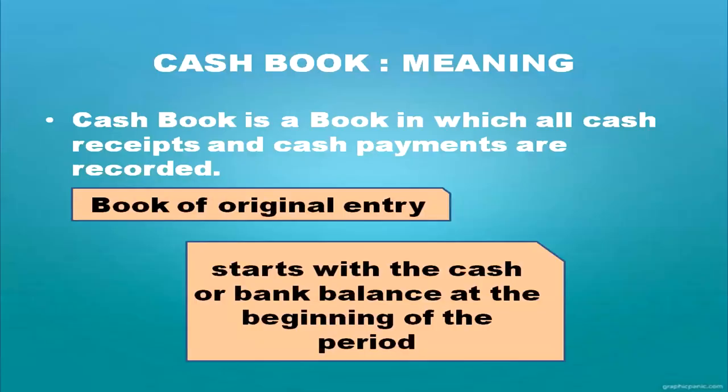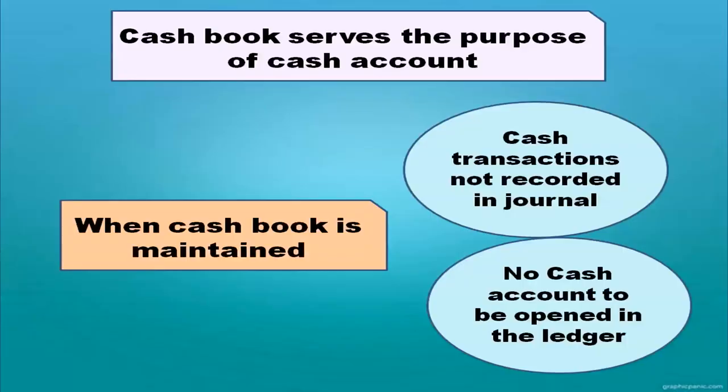Cash book is a book in which all cash receipts and cash payments are recorded. It is a book of original entry. All cash books will start with the cash balance or bank balance at the beginning of the period. If it is a new business, no opening cash balance will be there. When a cash book is maintained, cash transactions are not recorded in the journal and no cash account is opened in the ledger. Cash book serves the purpose of cash account.